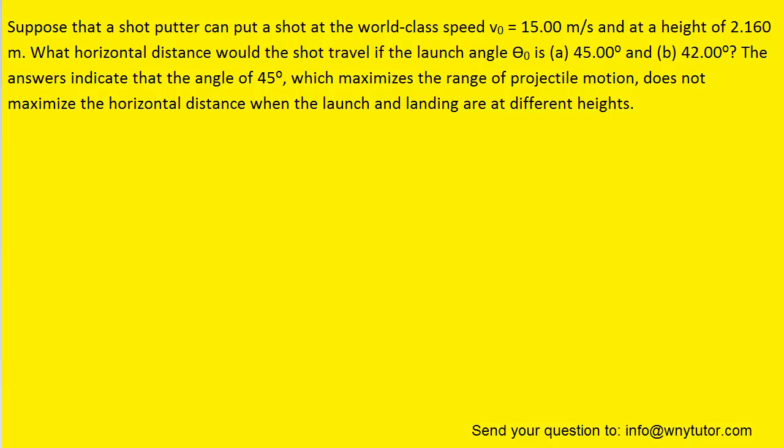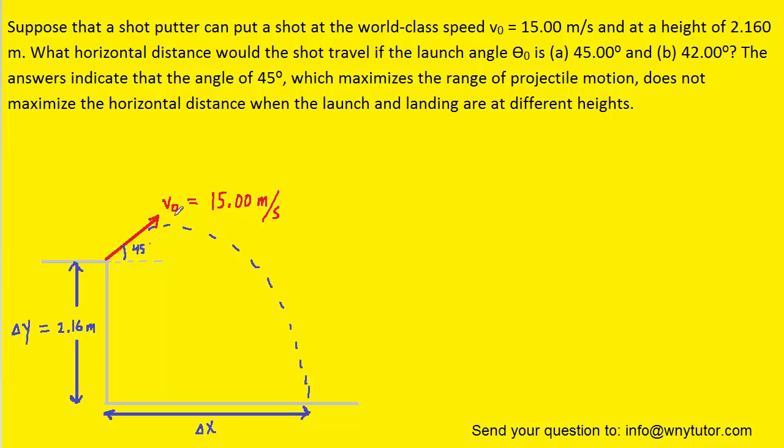We can go ahead and draw a picture of the shot putter throwing the shot. So in part A, the shot putter is launching the ball with an initial speed of 15 meters per second at that 45 degree angle.